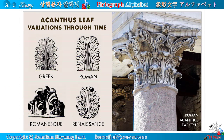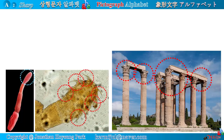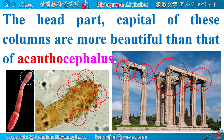Acanthus leaf design has been varied over time. Watch the variations in order: Greek, Roman, Romanesque, Renaissance. The head part — the capital — of these columns is more beautiful than that of the acanthocephalus.